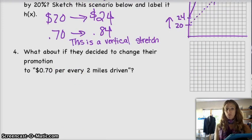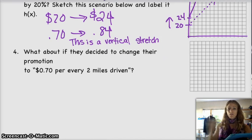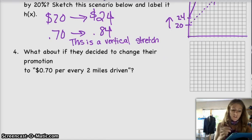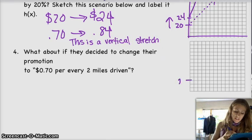Alright, last question. What if they decide to change their promotion to $0.70 for every two miles driven? So you can think about this as $0.35 for every one mile. Or $0.70 for every two miles. And it's all still going to be the same thing. It's like the same thing as number two. So it's going to end up being a horizontal stretch because, again, your flat rate doesn't change. So you've got that $20. That's still there.